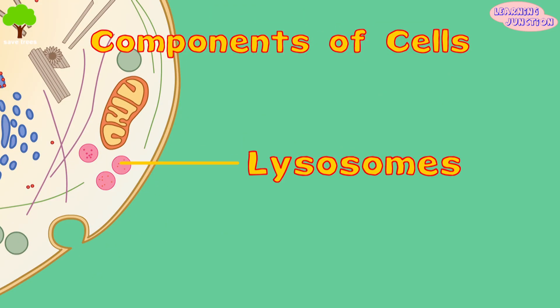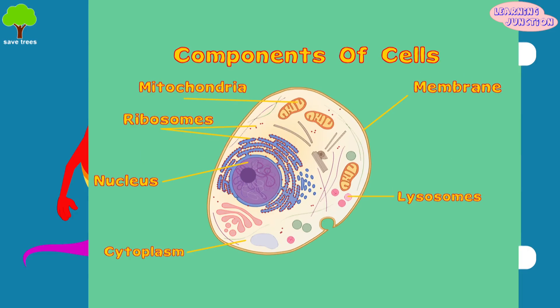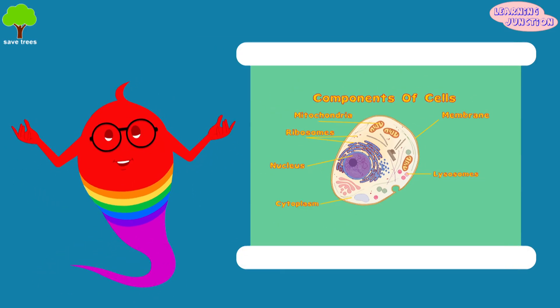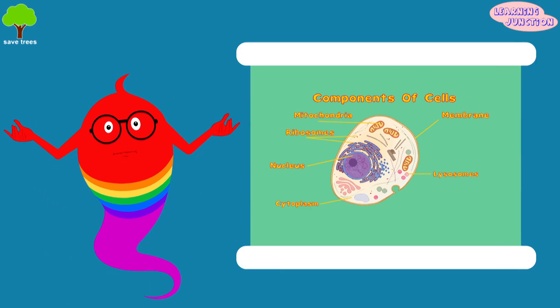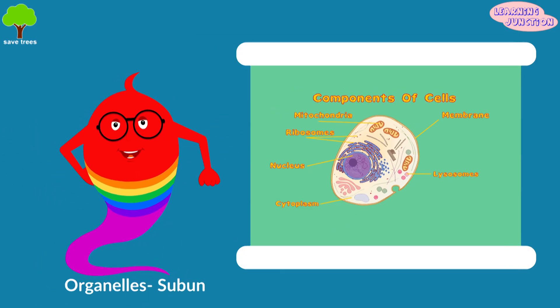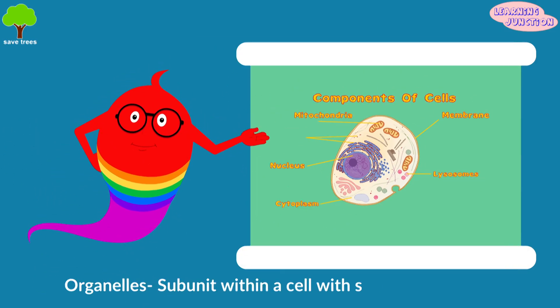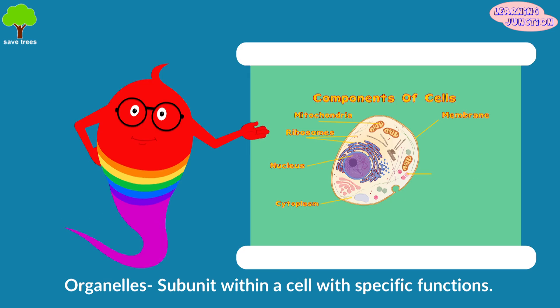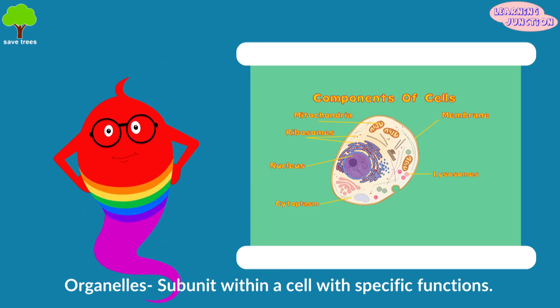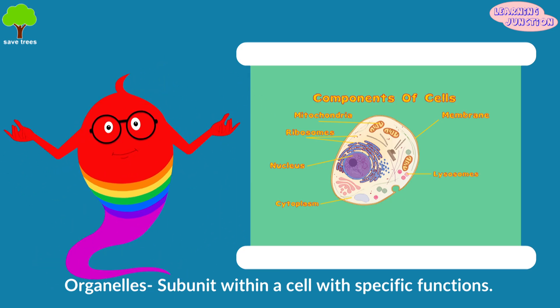Lysosomes clean up the place, getting rid of waste and other unwanted substances that may get into the cell. The machines inside the cell, like the nucleus, ribosomes, and lysosomes, are called organelles.